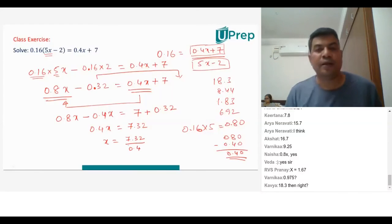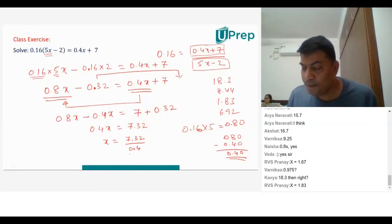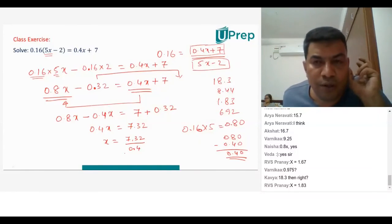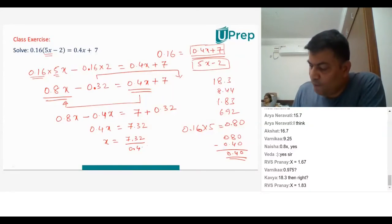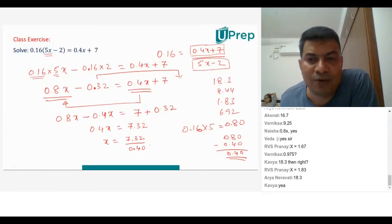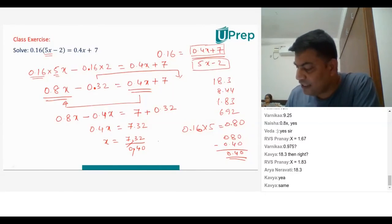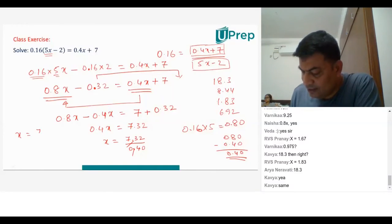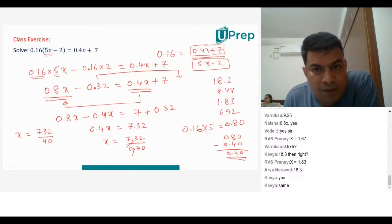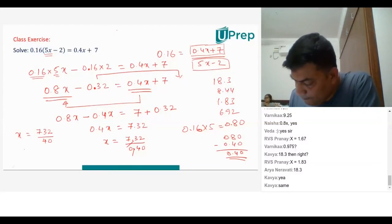So how do we do this? When we have 0.4 here, the fastest way is you can write 0.40 — it's the same value. So when after decimal there are two numbers on both sides, you can remove the decimal. So the value of x is 732 by 40. When you divide 7.32 by 4, you get 1.83 — so that will be 18.3. 18.3 will be the answer.